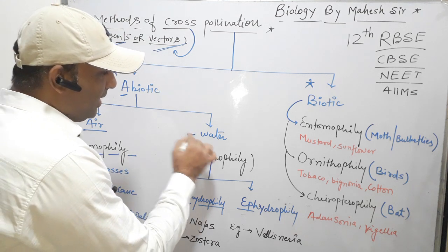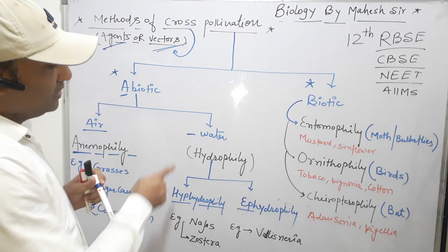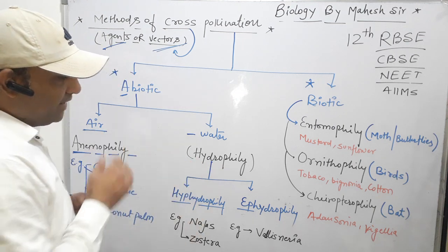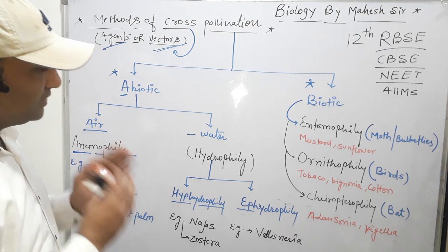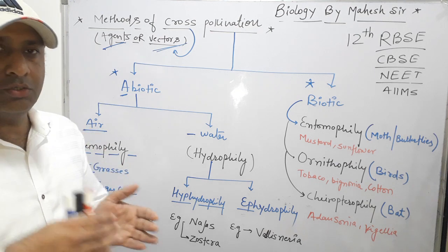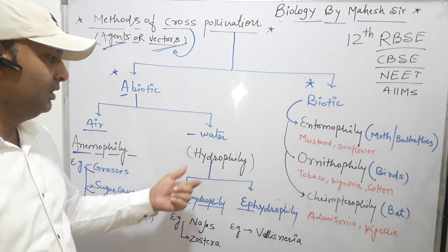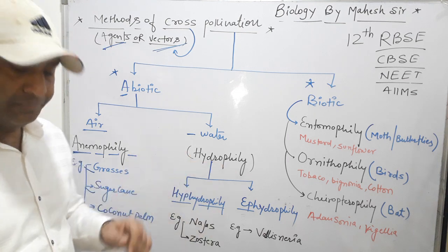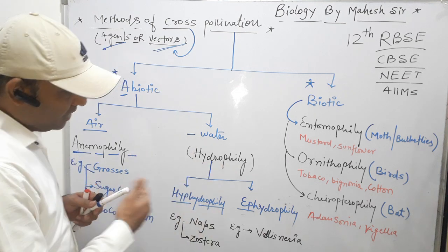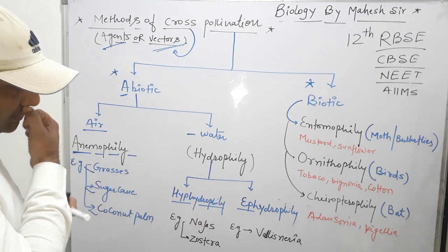When water is involved as an abiotic agent, the term is called hydrophily. Hydrophily means the process by which pollen grains travel from the mature anther to the stigma with the help of water. Hydrophily can be classified in two ways based on whether the pollen is present above or below the water surface.